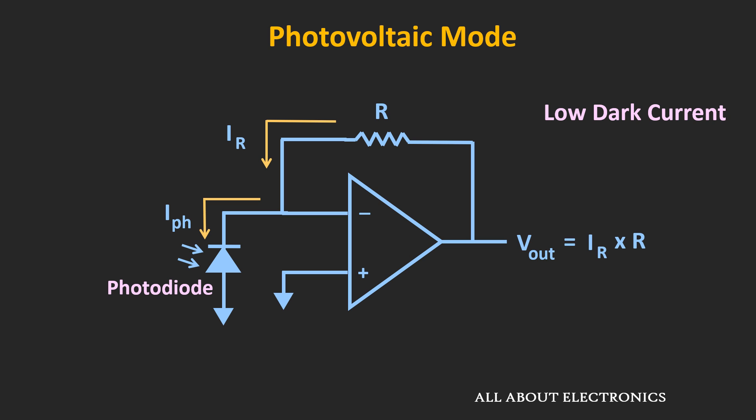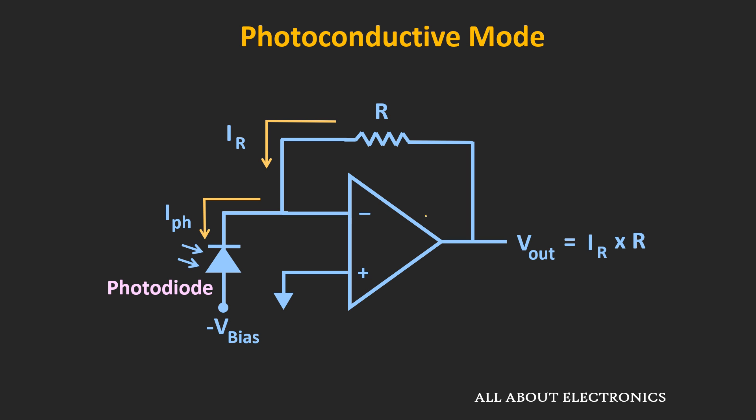However, in photovoltaic mode the response time is slow, so it is not suitable for fast switching applications. In the photoconductive mode, the photodiode is reverse biased, which widens the depletion region and reduces junction capacitance, making it suited for fast switching applications. But in reverse bias, the dark current also increases. So there is a trade-off between the two modes, and one should select the appropriate mode according to the requirement.